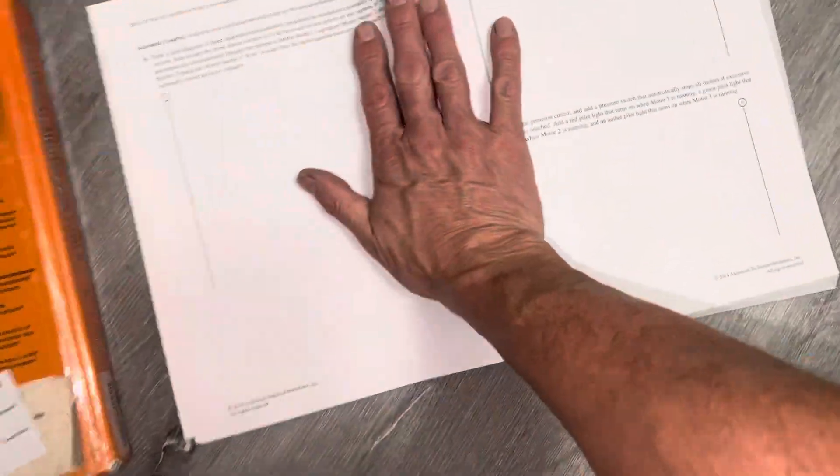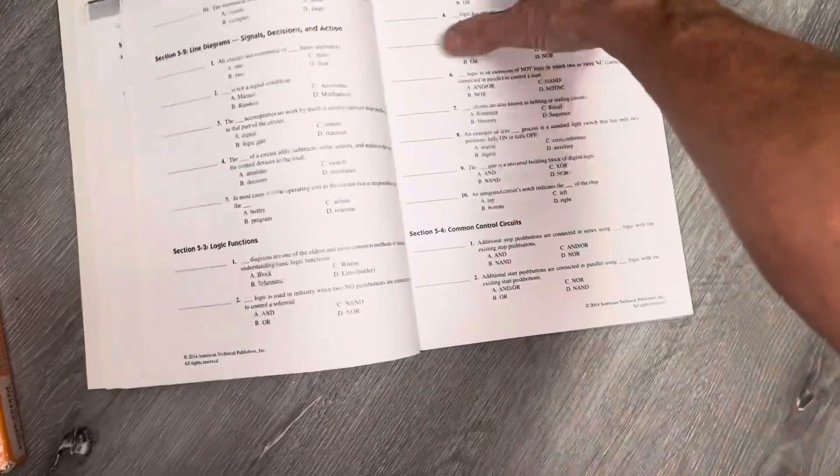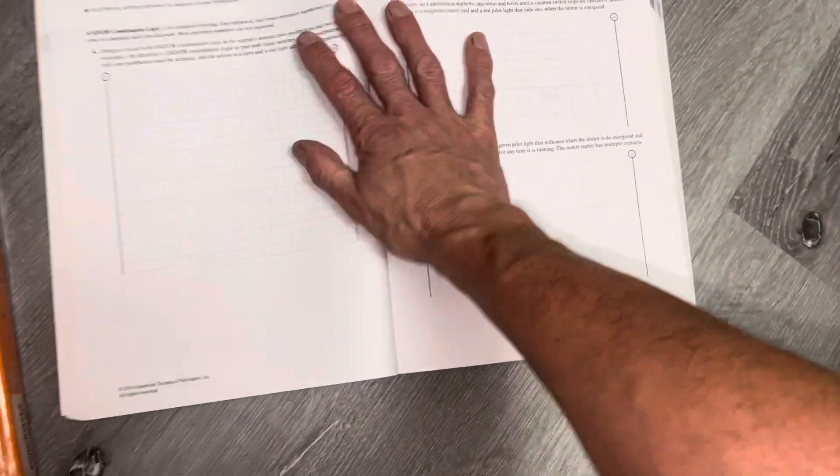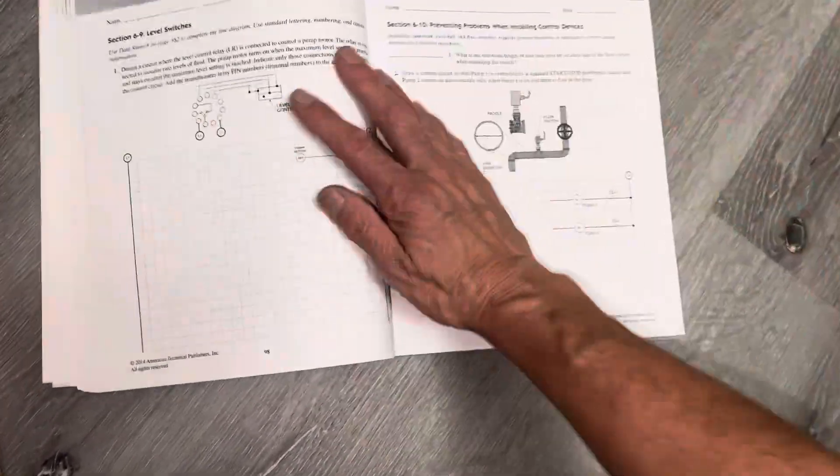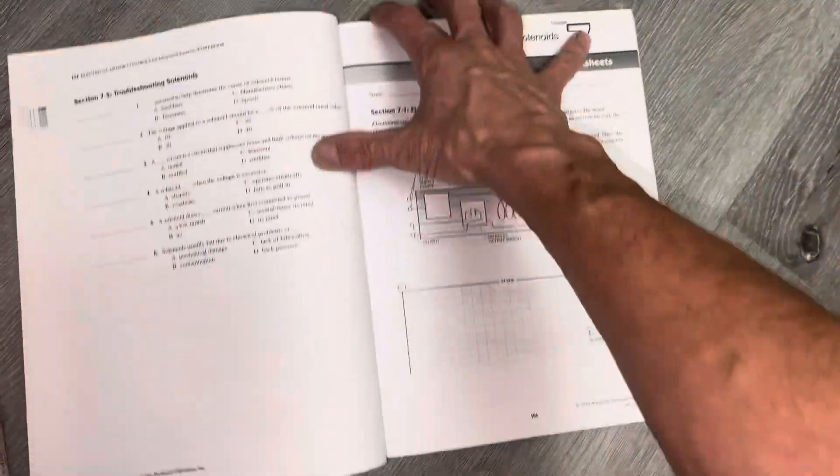And then there's the test workbook that you can do to train yourself. We would photocopy these and turn these in so we didn't write into books. But we actually took stuff out of here through photocopying.